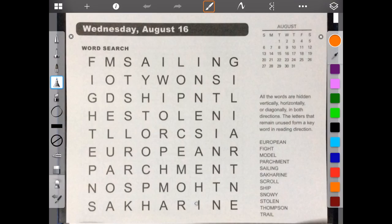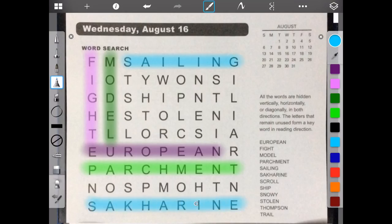So we're going to start with EU. Fight. Model. Parchment. Sailing. Saccharine. Scroll. Ship. Snowy. Stolen. Thompson. Trail.